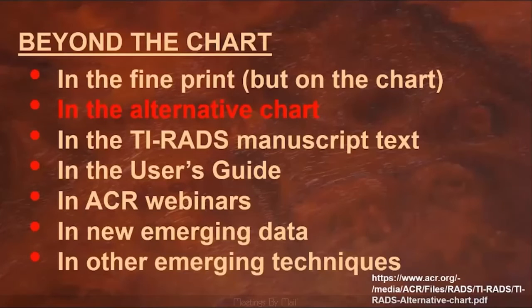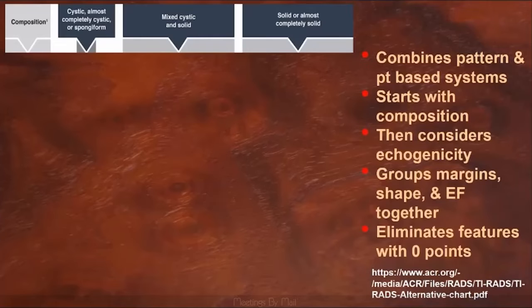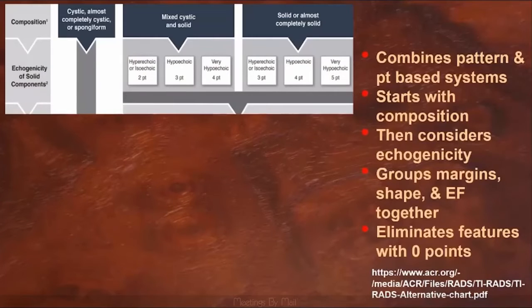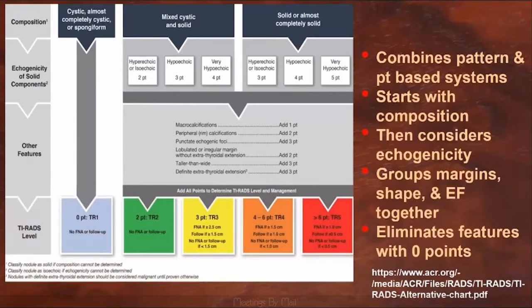Did you know that there's a second chart? You can find it on the ACR website. It combines a pattern-based approach with the point-based approach, and was designed to make it easier for radiologists who are more comfortable with the pattern approach. It starts with nodule composition, then adds in echogenicity and shows the accumulated points based on those two features. Next, it groups margins, shape, and echogenic foci together and eliminates features with zero points, such as smooth or ill-defined margins. After adding all the relevant points, the recommendations are shown based on the total points and the nodule size, just like always.